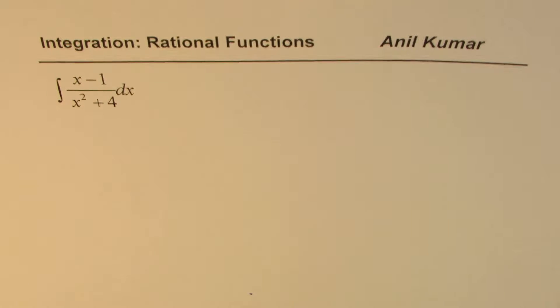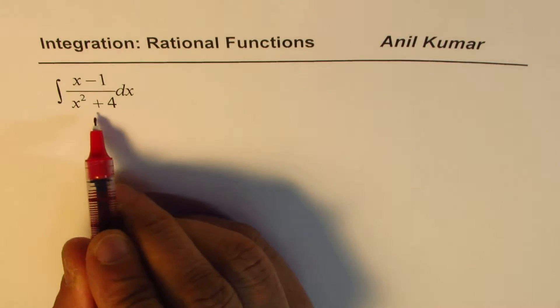Generally, you use partial factoring to factor rational functions. As you can see, x squared plus 4 is in the denominator, and it is not factorable, right?